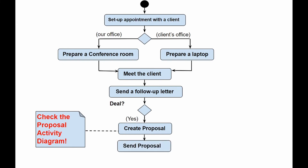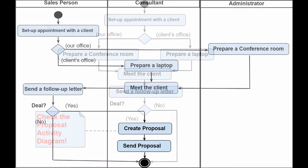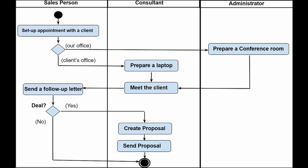We send the contract to the client and we get to the point where the process finalizes — we come here even if we didn't get the deal. Using swim lanes, the same process is divided into areas of responsibility: the salesperson who organizes the appointment and writes the follow-up letter, the consultant who prepares the presentation, holds the meeting, and crafts and sends the contract, and the secretary whose task includes preparing the conference room when the meeting takes place in our company's office.